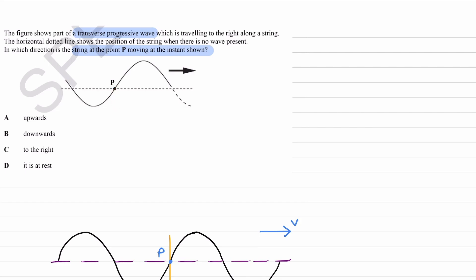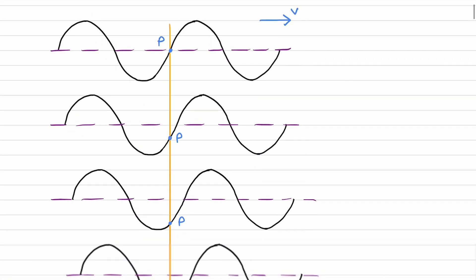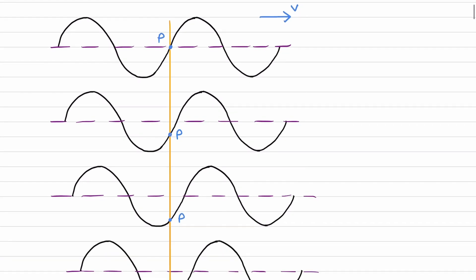If that still doesn't make sense, I've got some diagrams drawn here which will hopefully make it clearer. We have a progressive wave that's moving towards the right. This is particle P. The purple dashed line represents the equilibrium position. The orange line represents a vertical line which P must stay along. Remember that P goes up and down, so P must stay along this orange line.